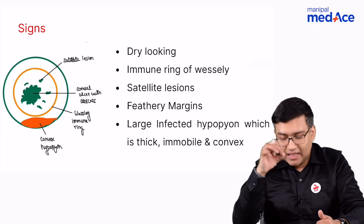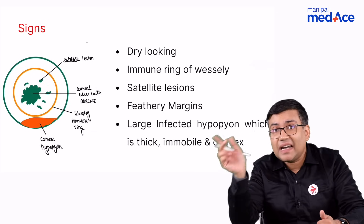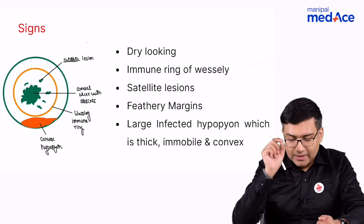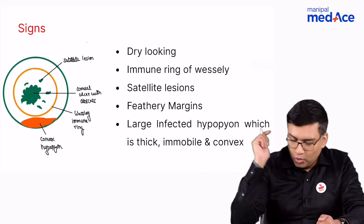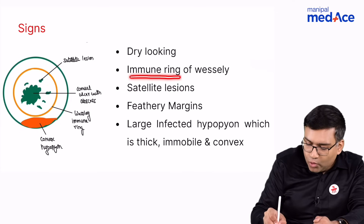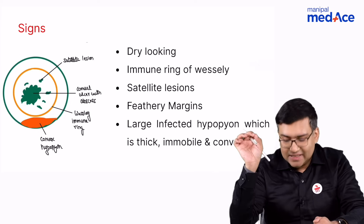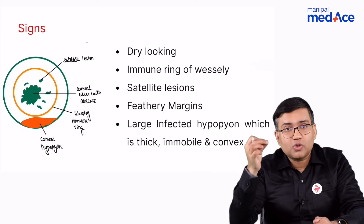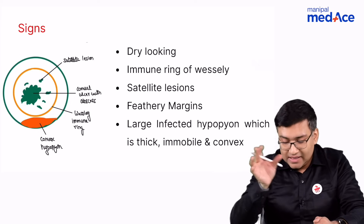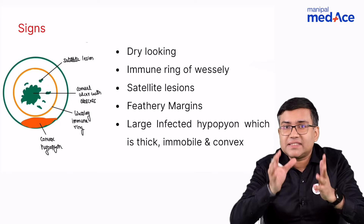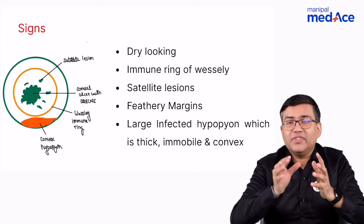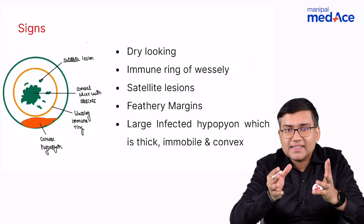Also, this is a dry-looking ulcer, unlike a bacterial corneal ulcer. You can see here an immune ring of Wesley. This is your immune ring of Wesley, and also you can have feathery margins of the ulcer and you can have a thick hypopyon which is convex in its configuration. These are some very important points you should remember regarding the fungal corneal ulcer.